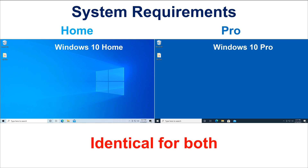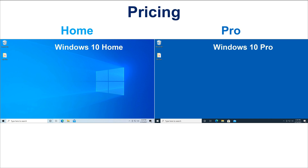First, let's start with the system requirements. Both Windows editions require the same system requirements, so there are no differences. Now let's see the pricing. At the time of this video, the retail prices on the Microsoft site are Windows 10 Home at $139 US dollars and Windows 10 Pro at $200 US dollars. Of course, you may find other resellers with cheaper prices.